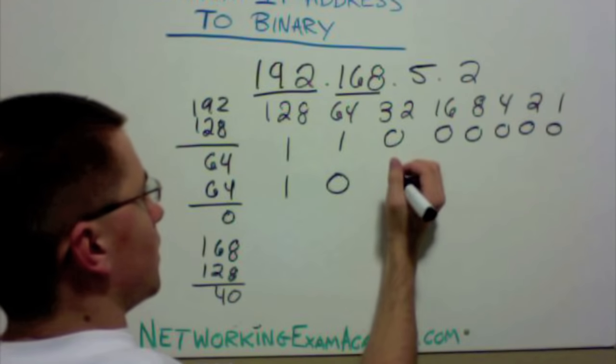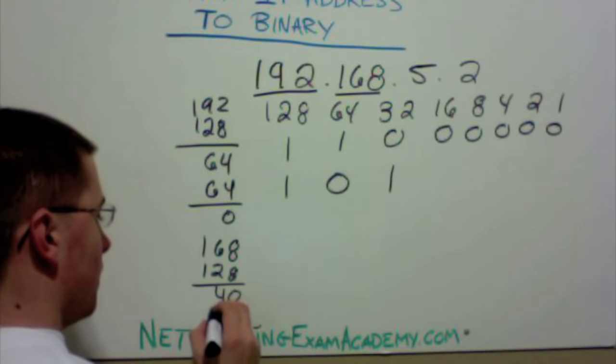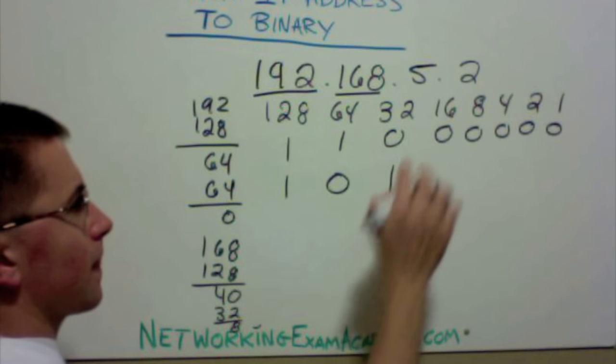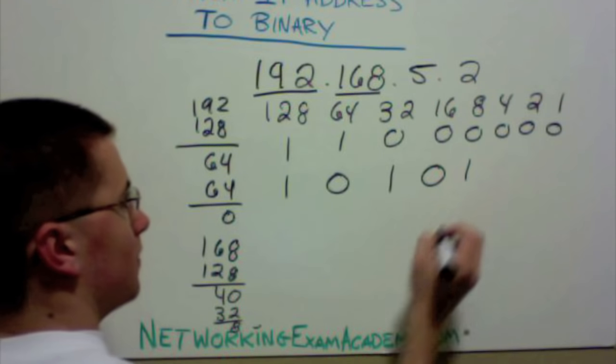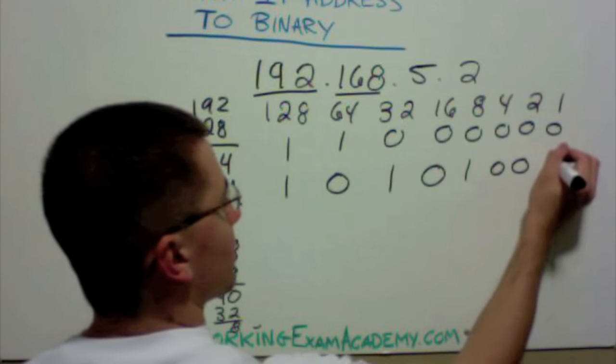32, however, does. So there's a 1 here. 40, subtract 32 equals 8. 16 is not going to 8. 8 goes into 8 one time. 8 minus 8 is 0, and we can place 0 for the remaining bits.